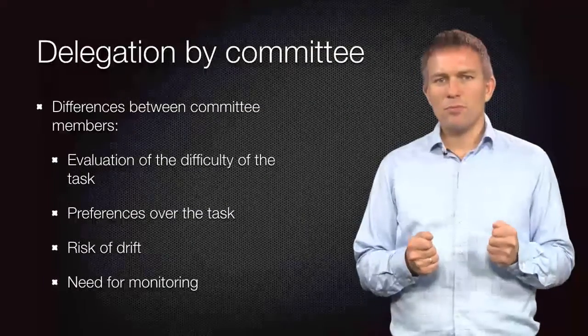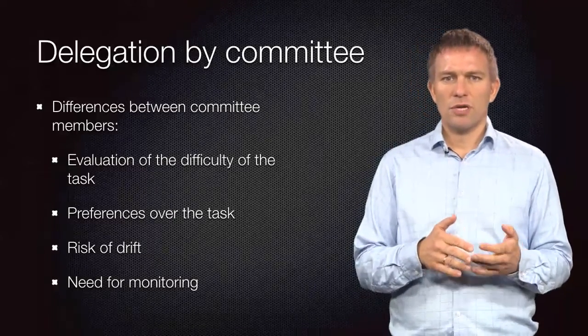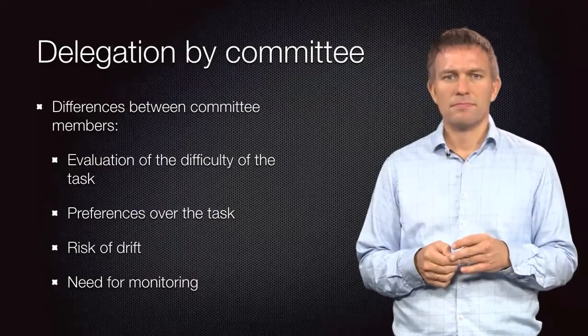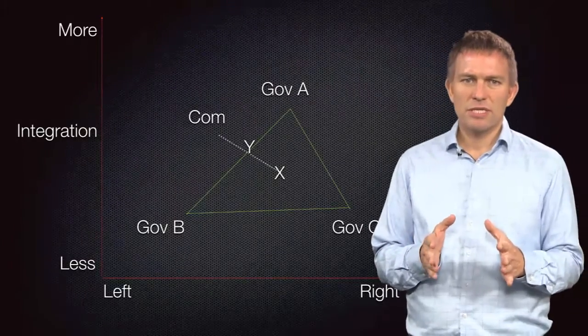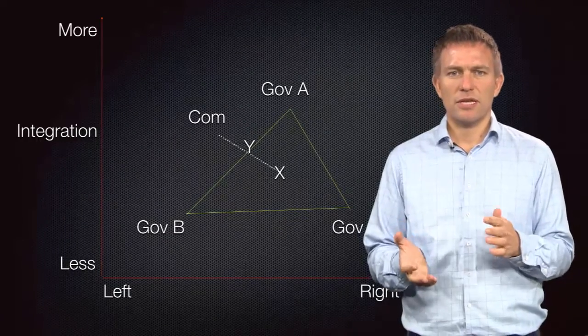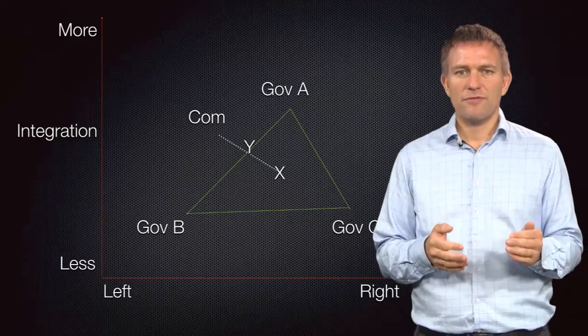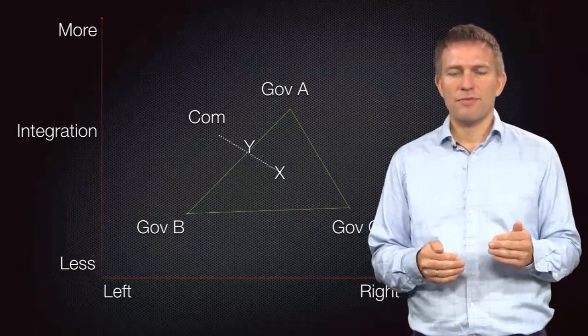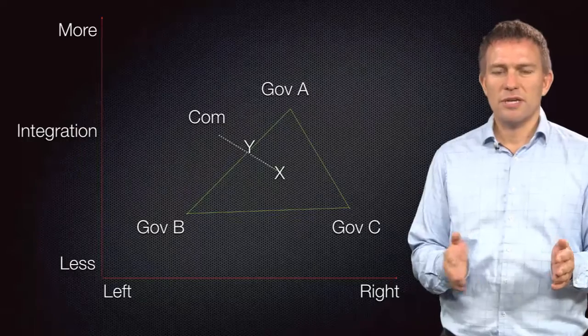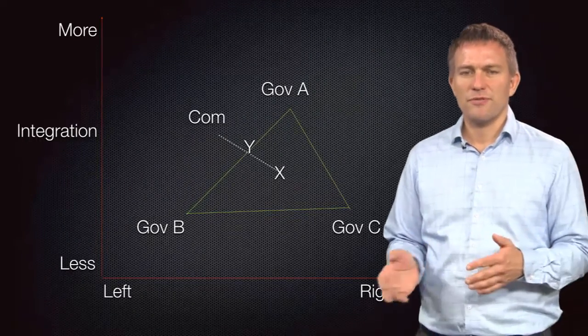So there might be more scope for agency drift when delegation is on behalf of a group of principals, rather than just one. To illustrate, consider a situation where there are three governments that want to form a union to foster political and economic integration. While sharing the goal, the governments differ on what they consider the optimal level of integration, as well as the optimal policy on the left-right policy dimension. These positions can be illustrated in the figure.